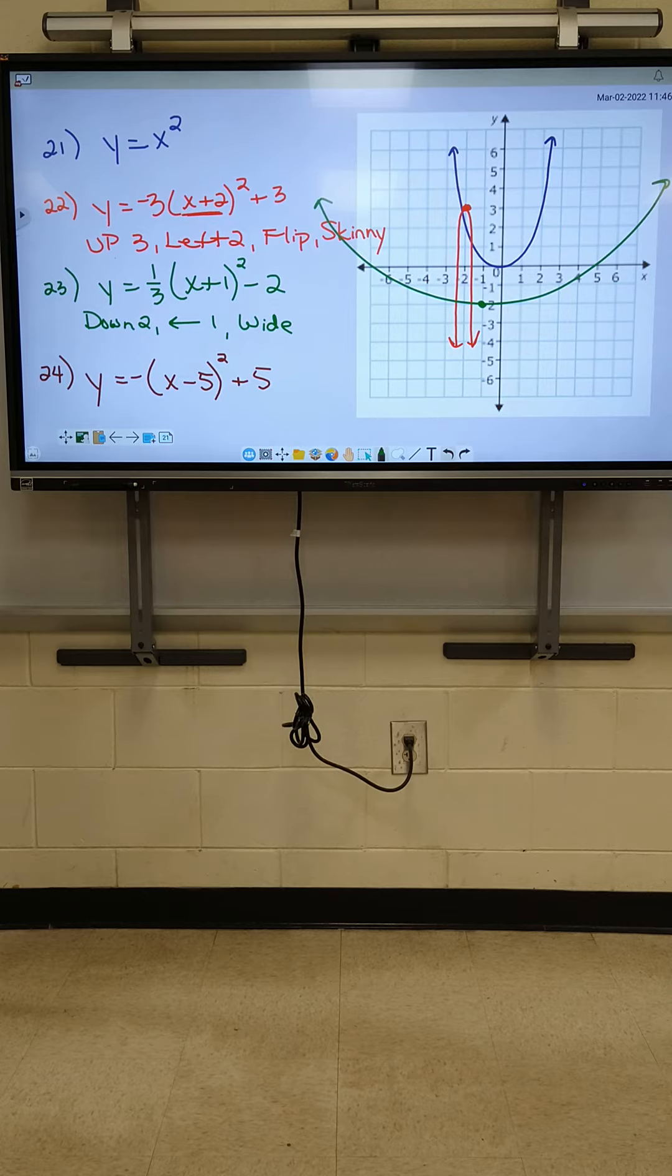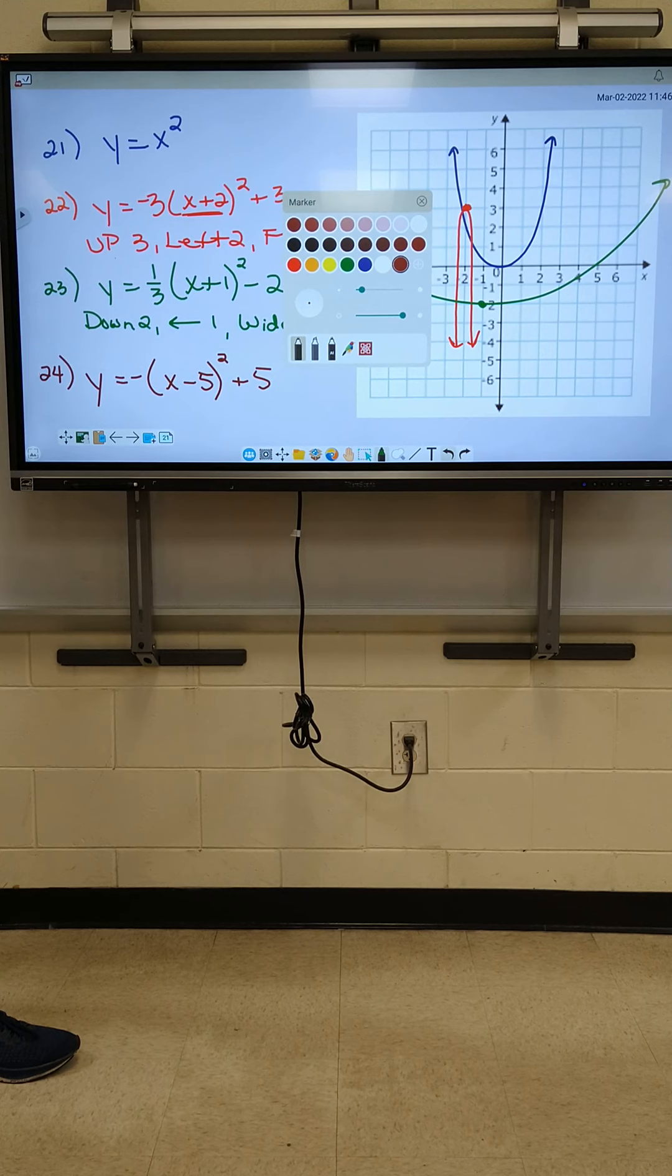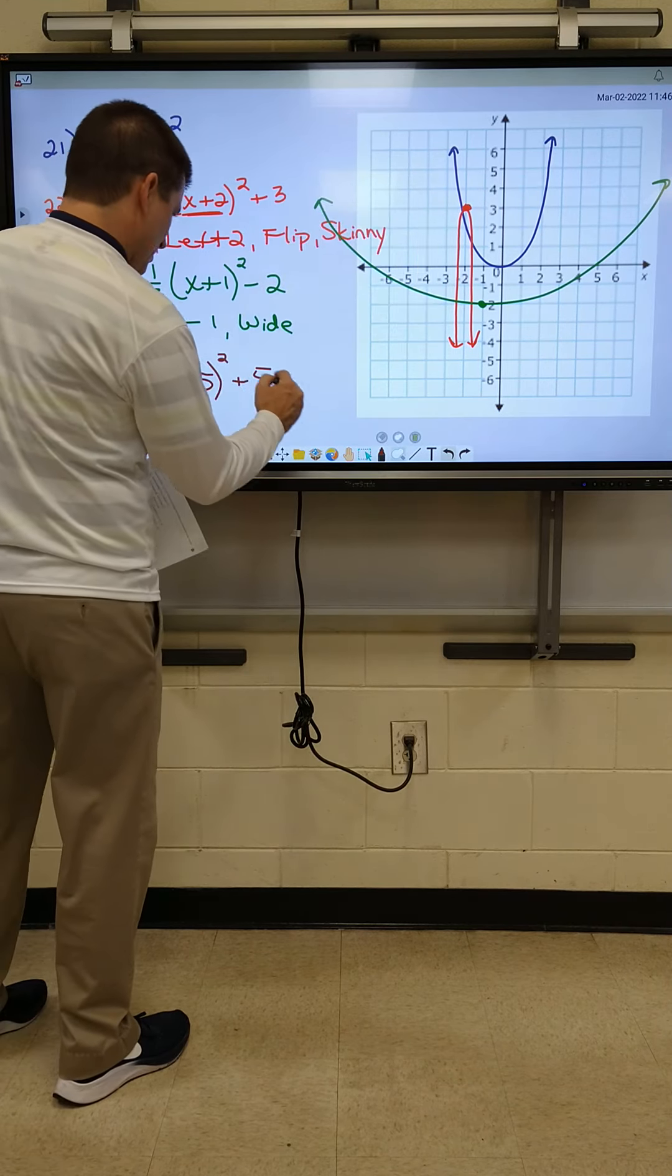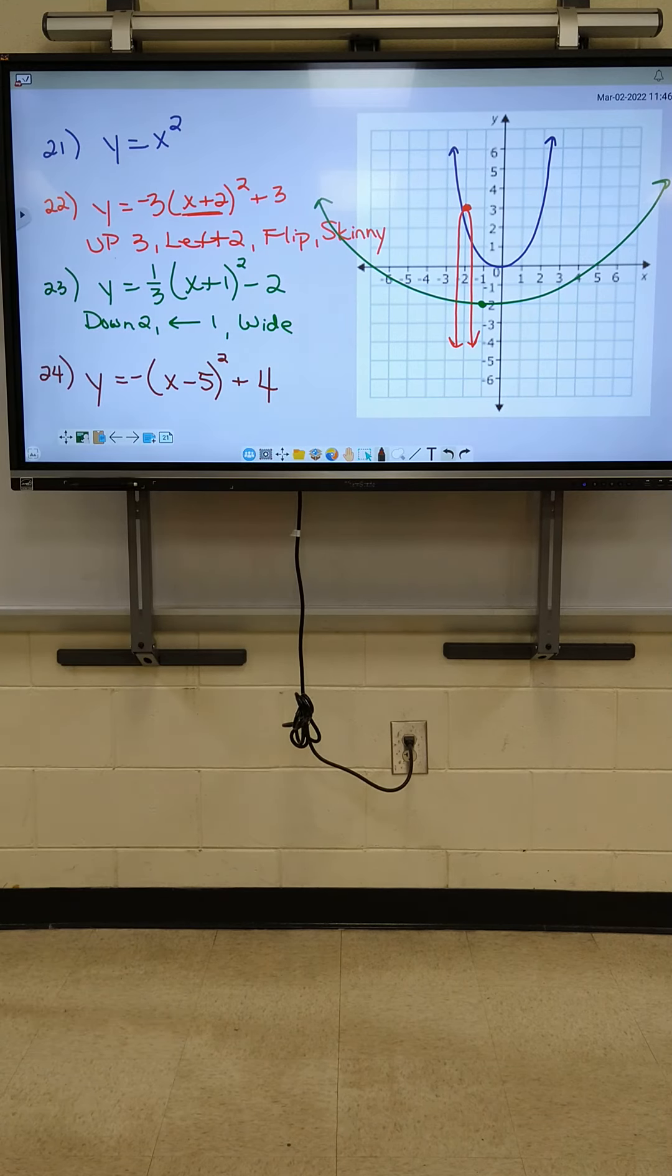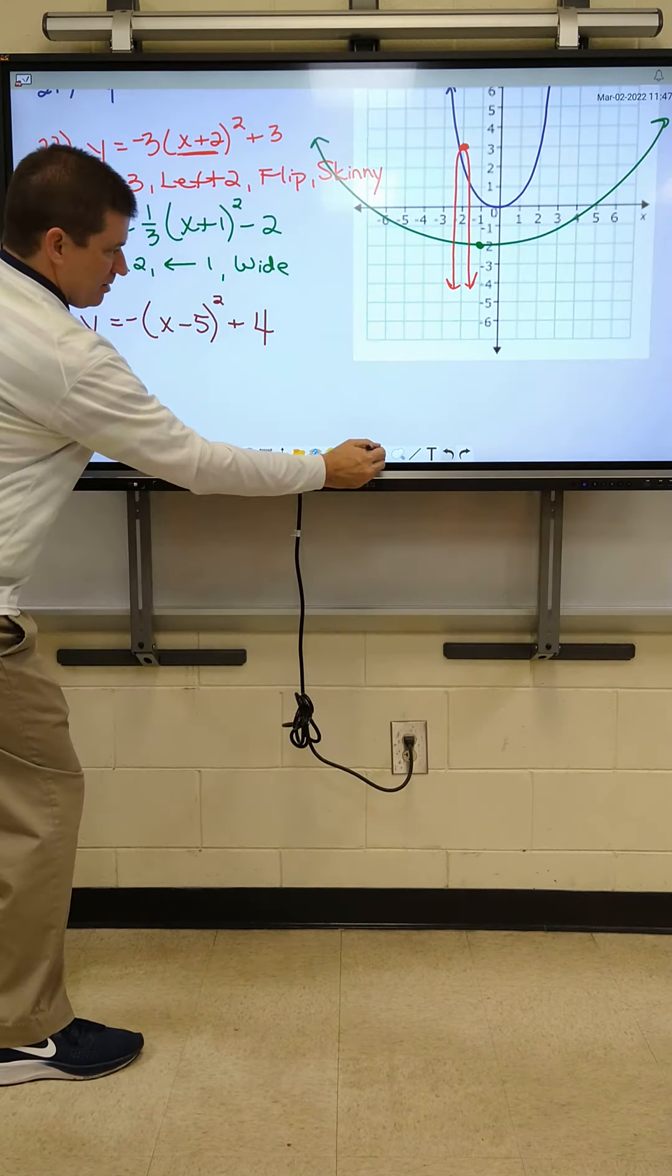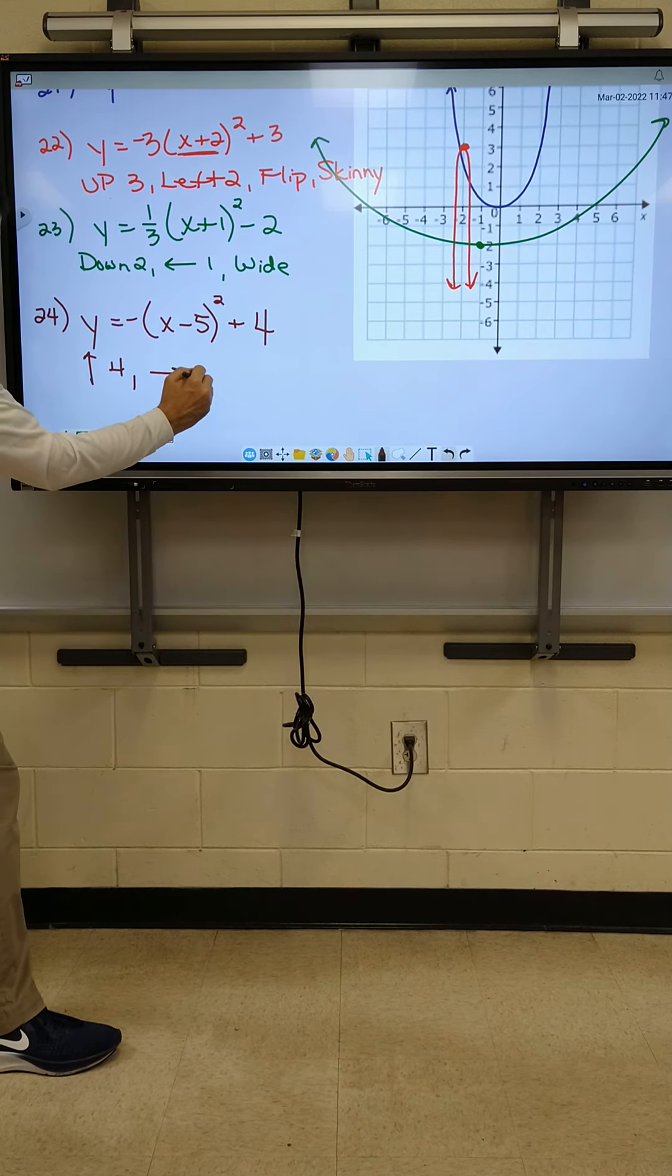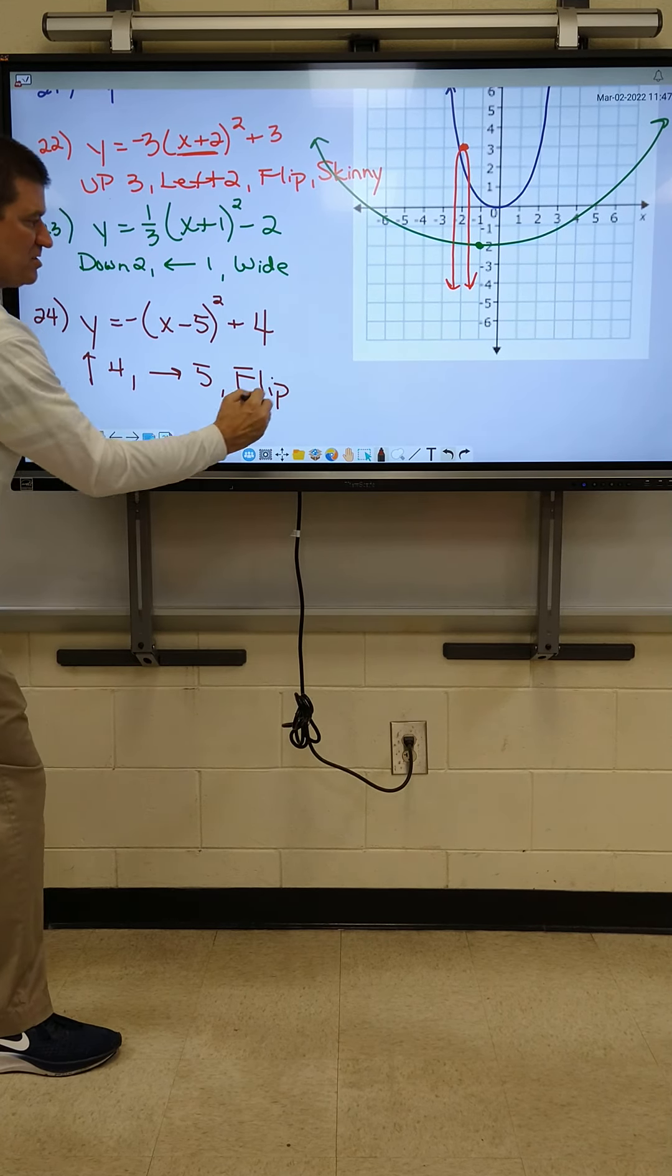All right. Question on 22. We good? Can I do 23? All right. Justin's going to help on 23. So start from the back, Justin. Go. Down two. All right. Let me write it. Down two. What else? Left one. I'm just going to use an arrow left one. Last thing. Wide. It's going to be skinny and wide. That's right. This one's wide. We've got to go down two, left one. Now, Justin, why don't I have to flip this one over? There's a reason why we flipped 22. Because there's not a negative. Because there's not a negative. So you've got to make it really wide and it's got to be going up. You're going to have to get both parts right to get it right on the test. You've got to write down the three changes and graph.